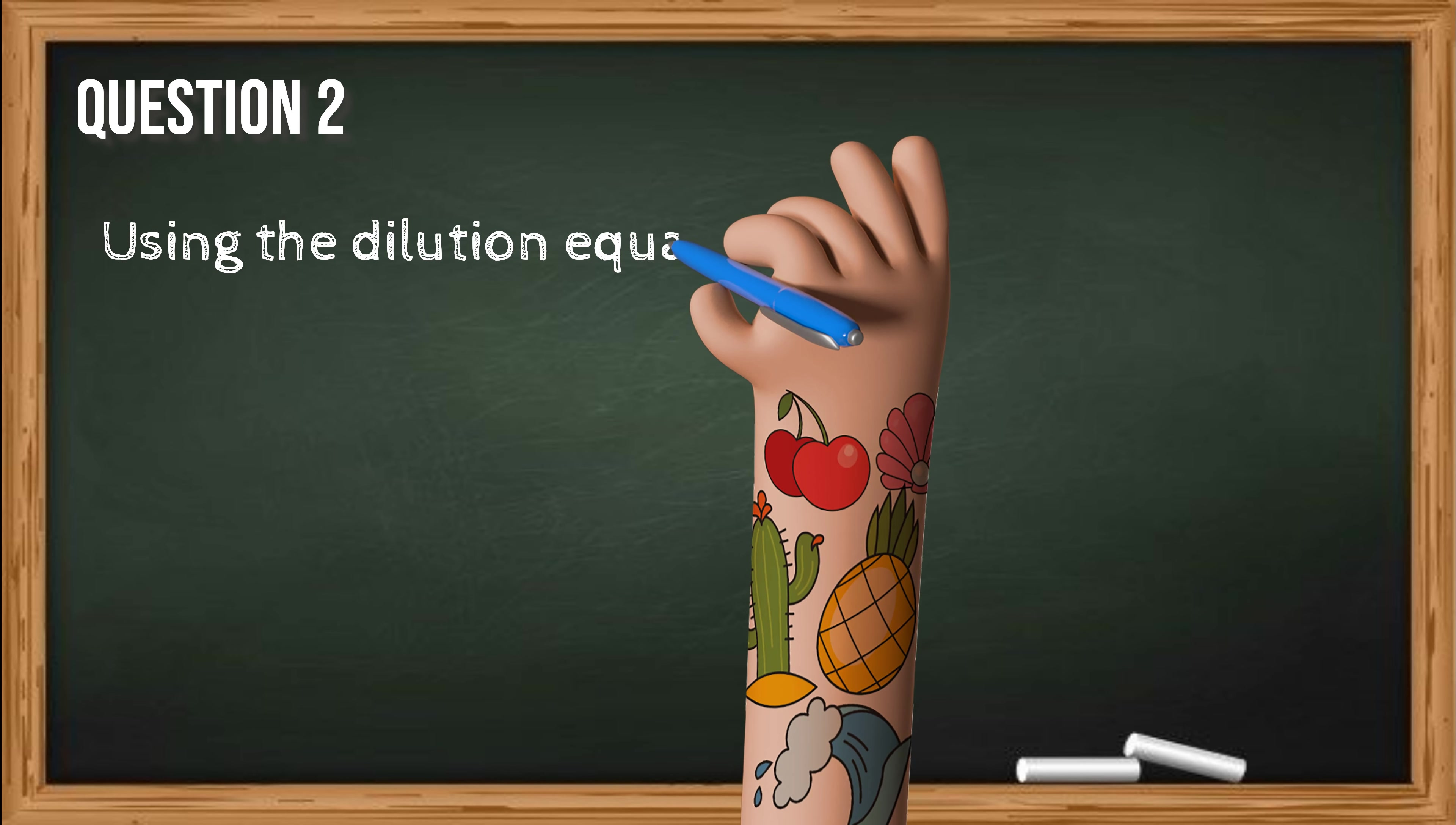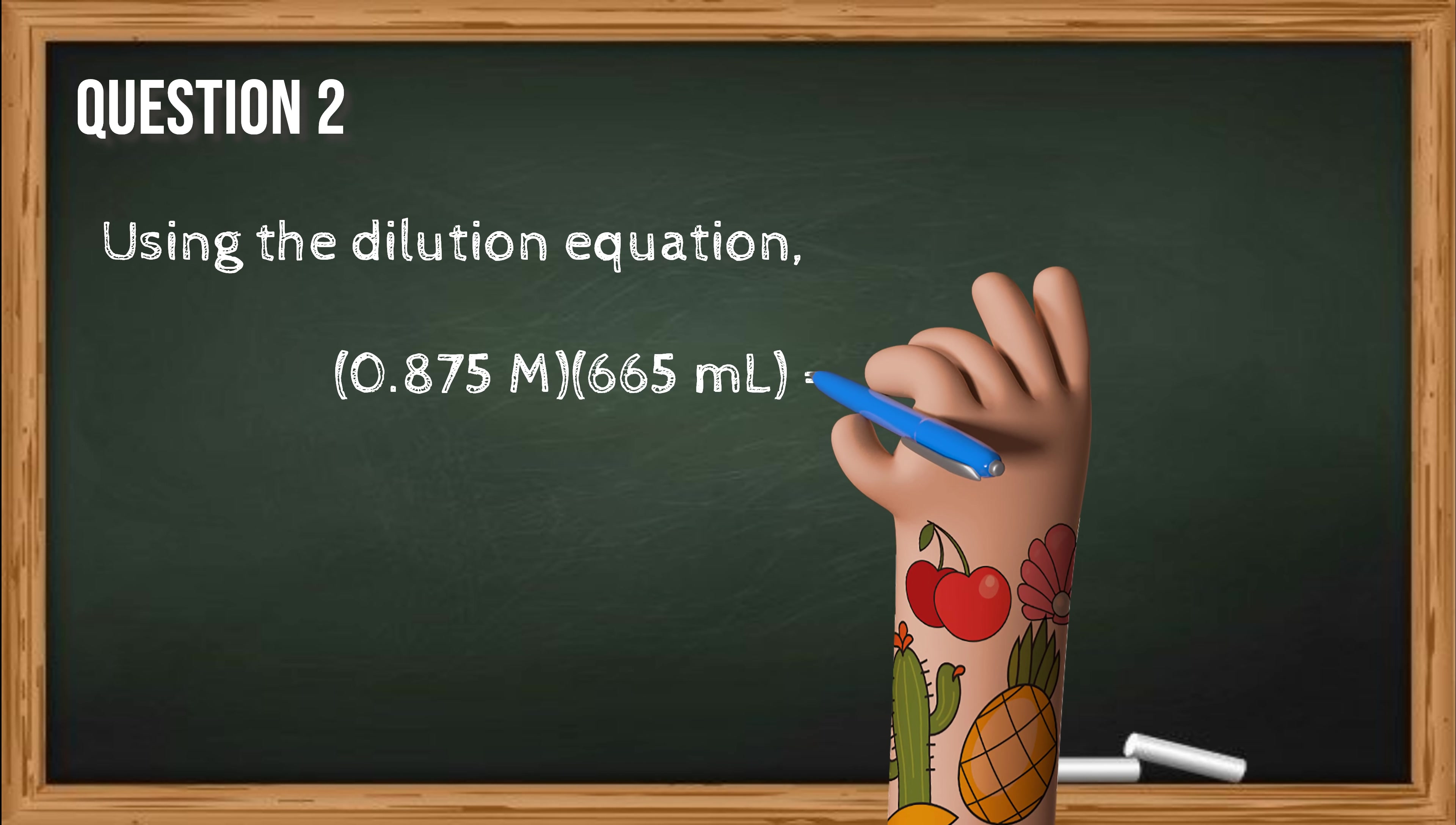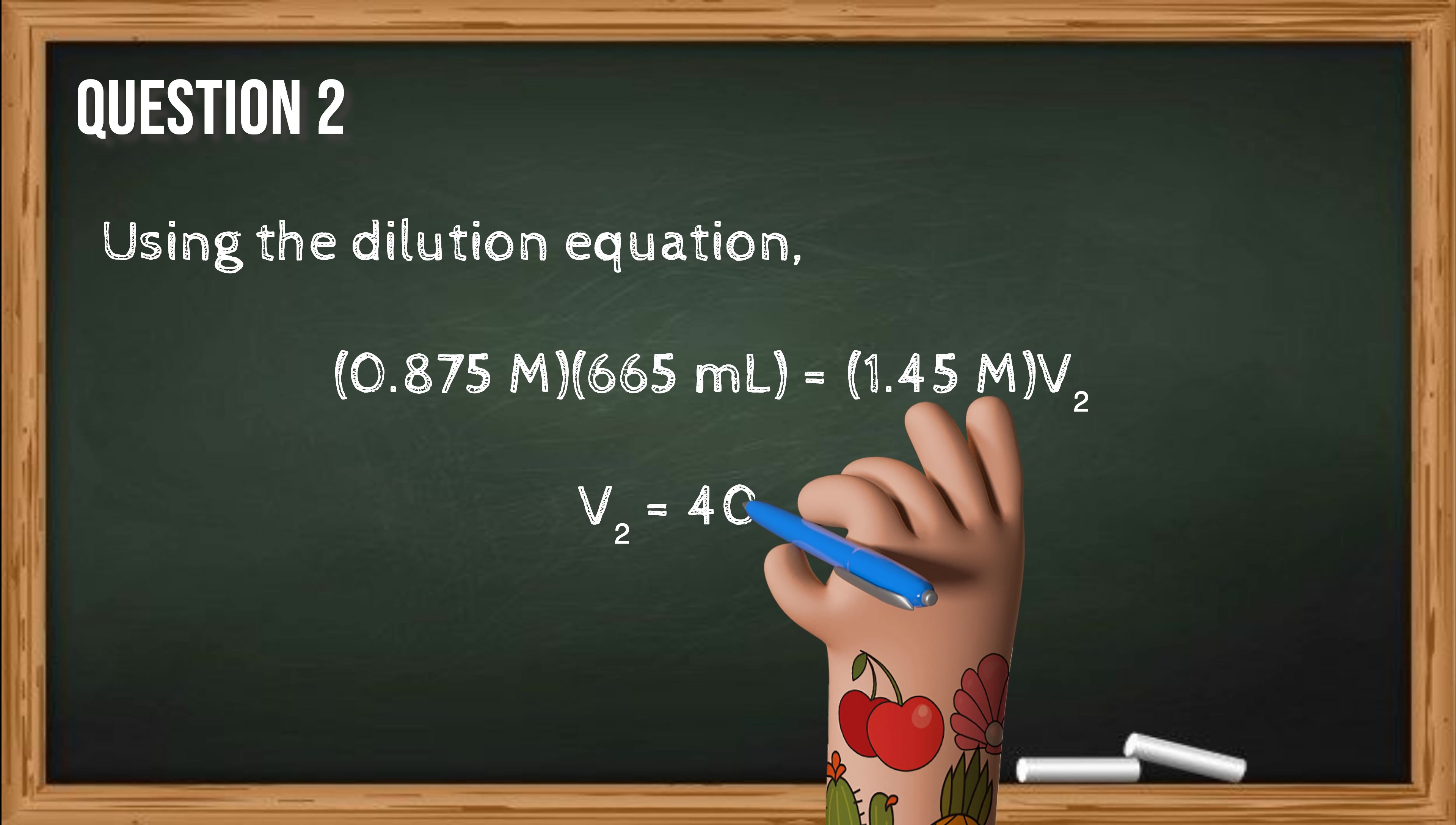Using the dilution equation, we have the following. 0.875 molar times 665 milliliters is equal to 1.45 molar times V2. Now solving for V2, we get the final volume of 401 milliliters.